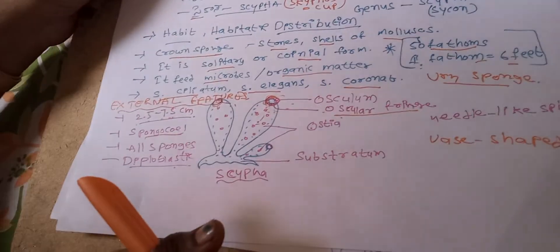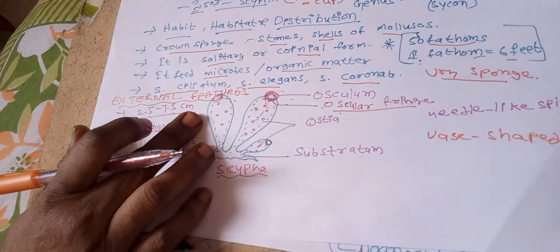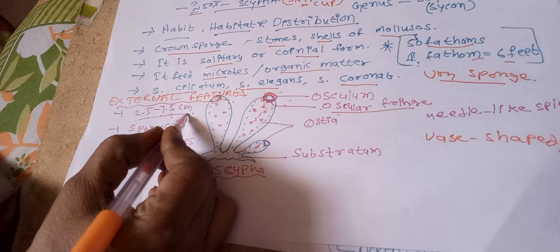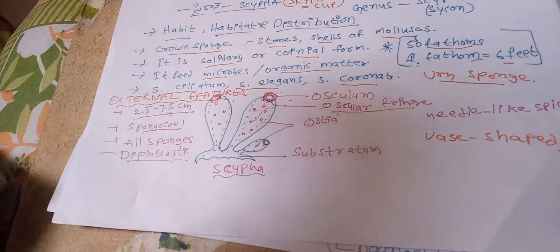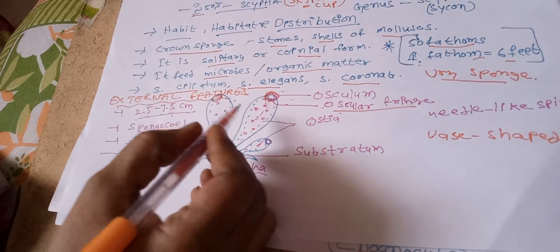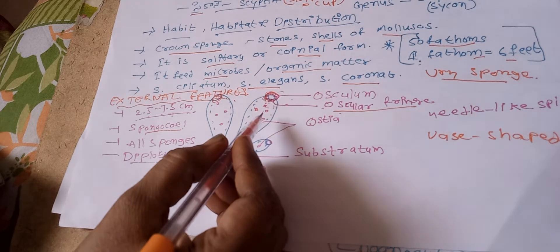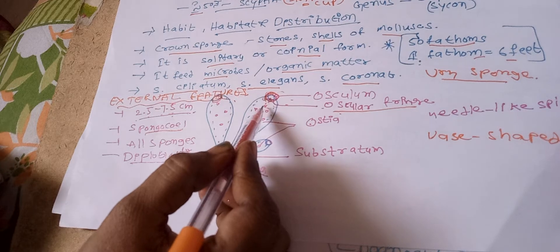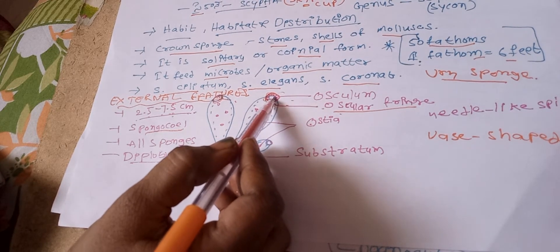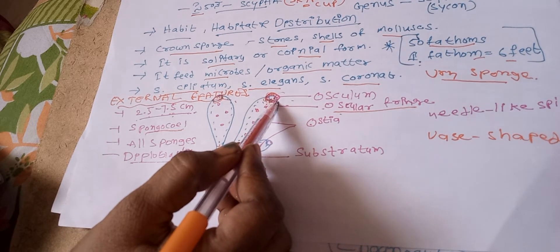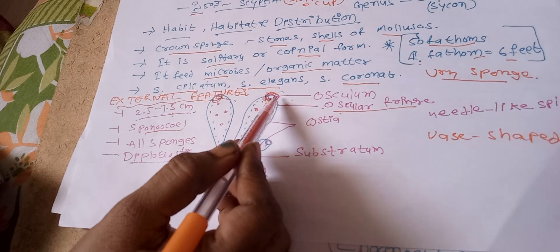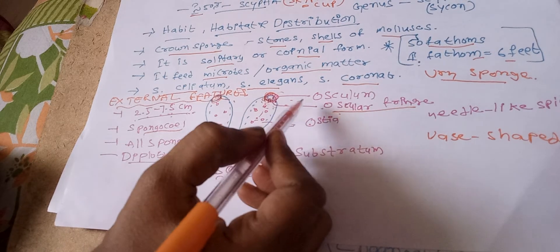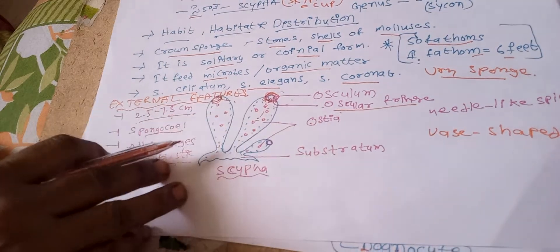External features: Scypha is vase-shaped and 2.5 to 7.5 cm in length. It is gray and light brown in color. Sponges show little elasticity. The surface contains numerous minute openings called ostia and large cavity called spongocoel. Inside the body is located spongocoel. Spongocoel opens on the outside through large opening called osculum. Osculum situated at the free end of the body. Osculum is encircled by needle-like structures or spicules called oscular fringe. This oscular fringe checks small animals from entering into the body.